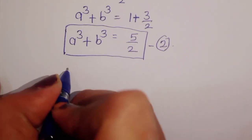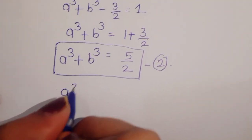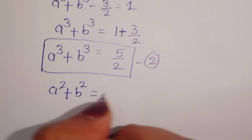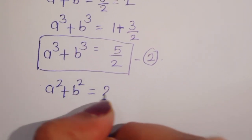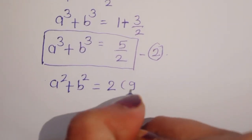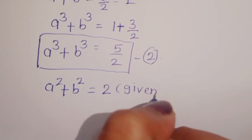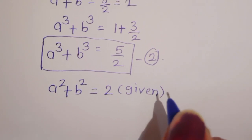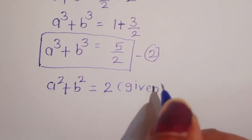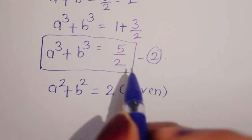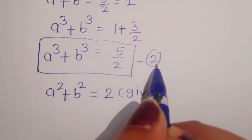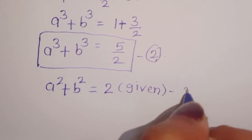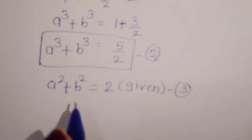Now a squared plus b squared is equal to 2, which is given. We label this as Equation 3. Now we can multiply Equation 2 and Equation 3.